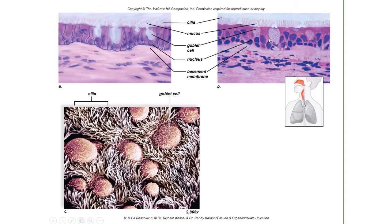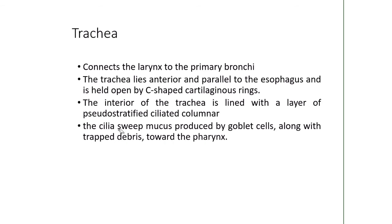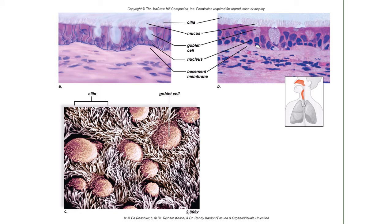The lining of the trachea consists of cells called pseudo-stratified ciliated columnar cells. Columnar means they are rectangular in shape, and ciliated means they have cilia on them. Stratified normally means multiple layers, but pseudo means fake — so even though it looks like multiple layers, it's actually just a single layer. Each cell makes contact with the basement membrane. You can see the cilia at the top, and under higher magnification, they look like a carpet or sea anemone.